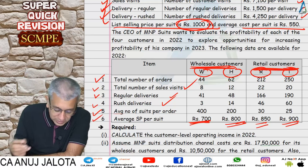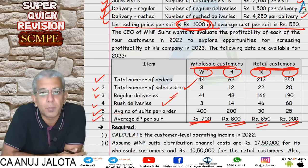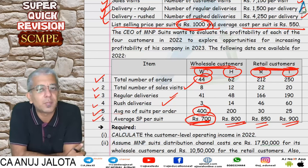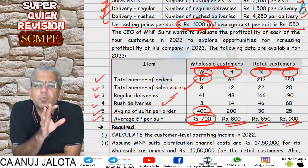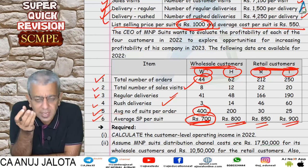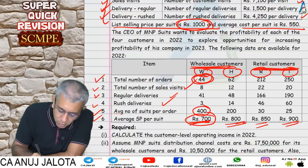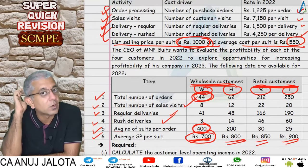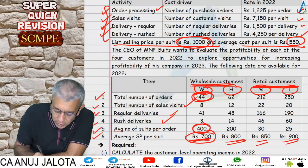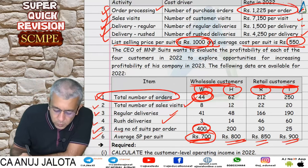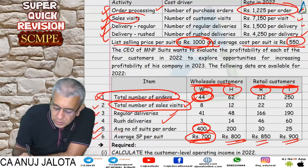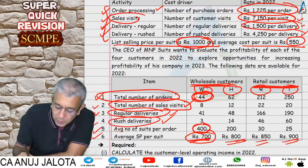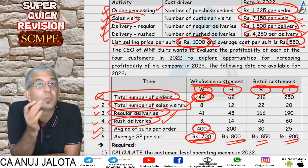We find the customer level operating income. Sales = number of orders × average suits per order × selling price. Direct cost = units sold × 550. Then we apply activity-based costing for overhead: order processing cost = number of orders × cost per order; sales visits cost = number of sales visits × rate; regular deliveries × rate; rush deliveries × rate. This gives us customer level operating income for each customer.